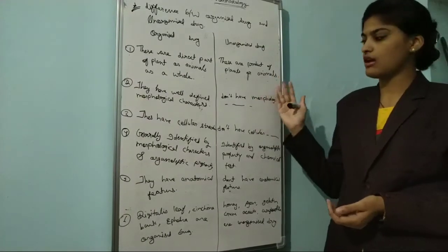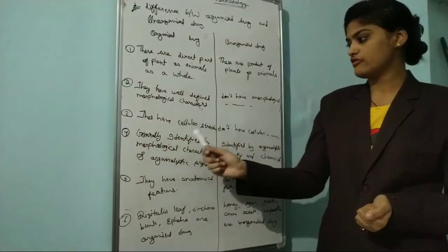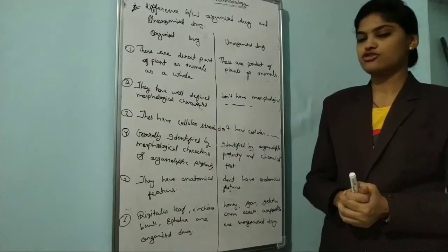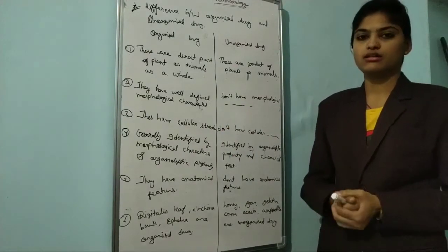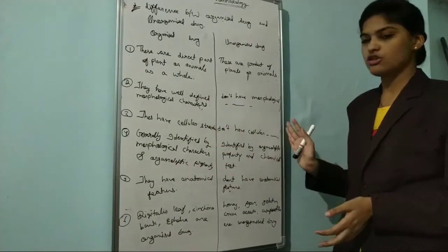Third point is organized drugs have cellular structure because this is direct from nature, so they have cellular structure. Unorganized drugs, the cellular structure is not present.